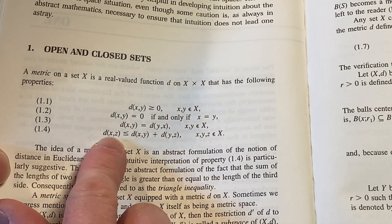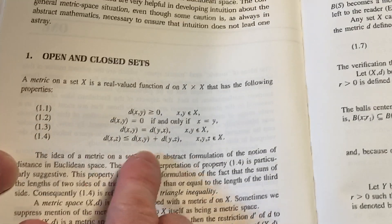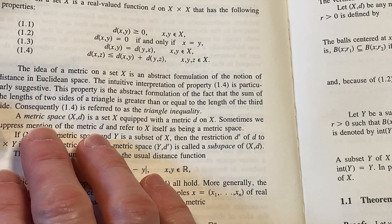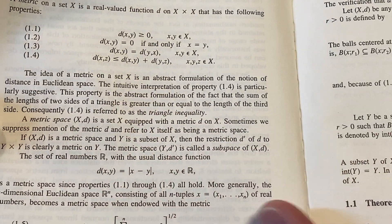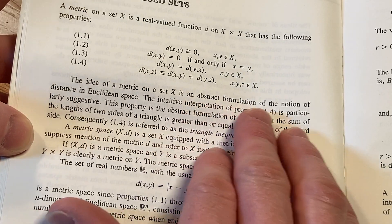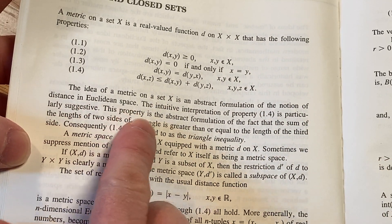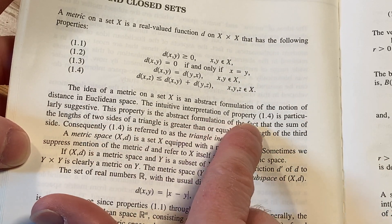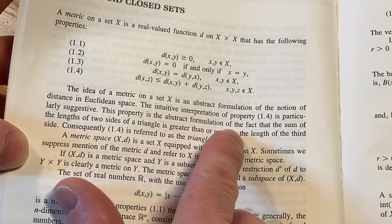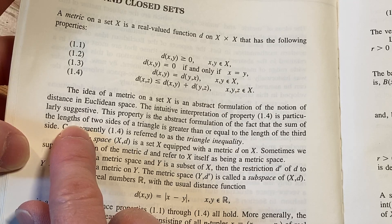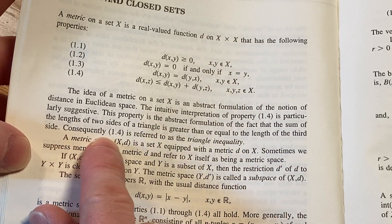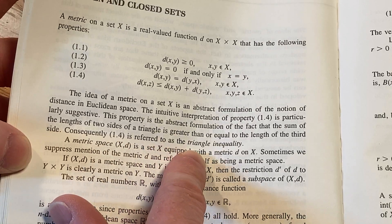And this one here is the triangle inequality. The distance between x and z is less than or equal to the distance between x and y plus the distance between y and z. And then it goes on. It says, the idea of a metric on a set X is an abstract formulation of the notion of distance in Euclidean space. The intuitive interpretation of property 1.4 is particularly suggestive. This property is the abstract formulation of the fact that the sum of the lengths of two sides of a triangle is greater than or equal to the length of the third side. Consequently, 1.4 is referred to as the triangle inequality.